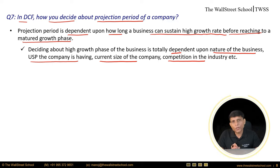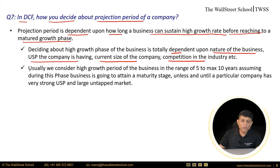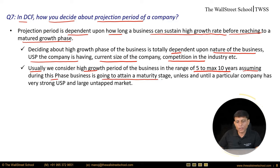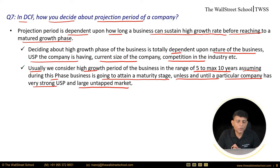Current size of the company also plays a crucial role. If the current size is small, the company can sustain a high growth rate for an extended period, whereas large companies cannot sustain high growth for as long due to the base effect. If competition is very stiff, high growth cannot be sustained for longer; if competition is very limited, we can assume an extended high growth phase. Usually we consider the high growth phase in the range of 5 to 10 years, assuming the business will attain maturity during this phase, unless the company has a very strong USP and a large untapped market.